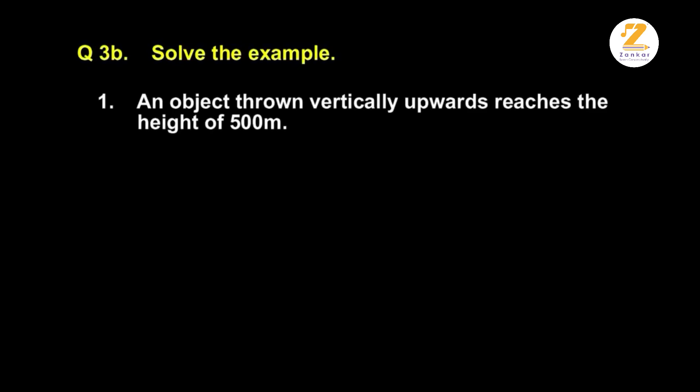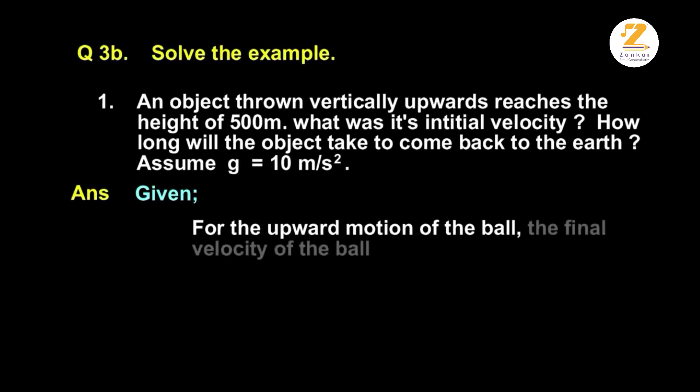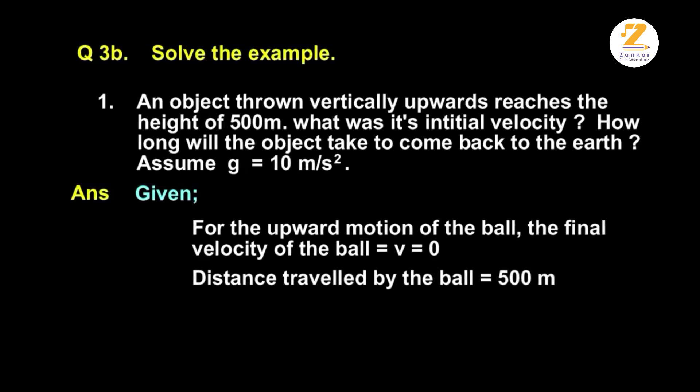An object thrown vertically upwards reaches a height of 500 meters. What was its initial velocity? How long will the object take to come back to the earth? Assume g is equal to 10 meter per second square. Given, for the upward motion of the ball, the final velocity of the ball is equal to v is equal to zero. Distance travelled by the ball is equal to 500 meter. Acceleration a is equal to minus g is equal to minus 10 meter per second square. Initial velocity u is equal to question mark.